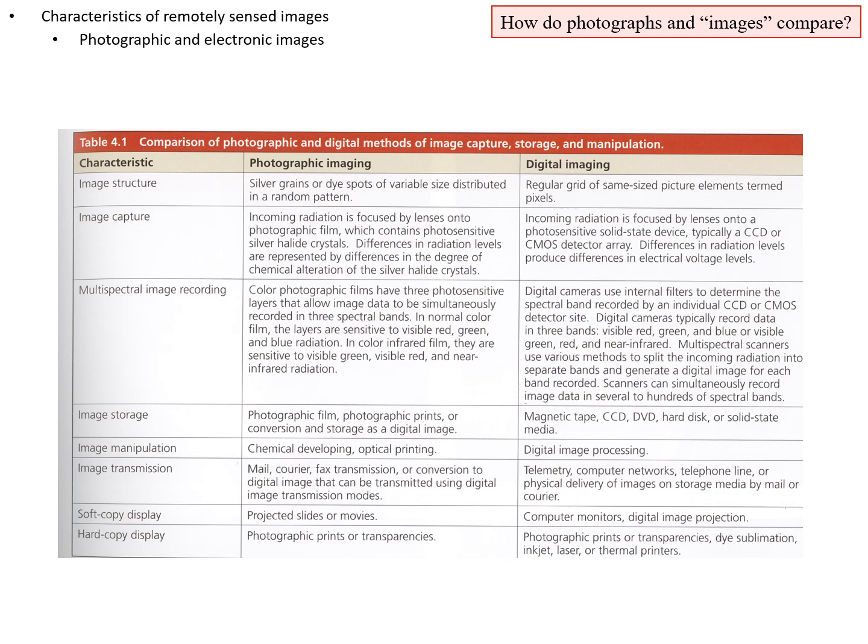For image manipulation, you can modify photographic development by changing the amount of time the film is in the developing solution. With a digital image, we can do digital image processing, which involves applying basic mathematical relationships to modify the brightness of the image either spectrally — for instance, changing the contrast of an image — or spatially, such as getting rid of noisy pixels. We'll have a whole section on digital image processing.